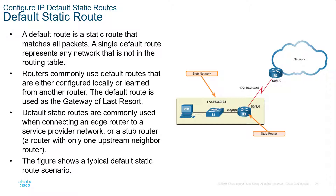We may have a cloud connection down here and a different connection. We can say anything going to the corporate network, send this way. Anything going to the internet, we can send through a different route. We can match the addresses for the corporate network, and we can say anything else goes through the second network.